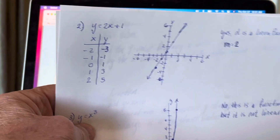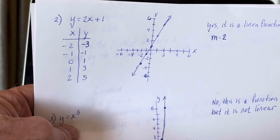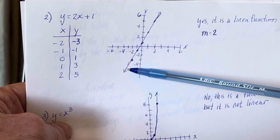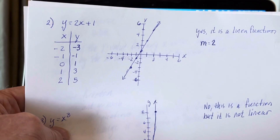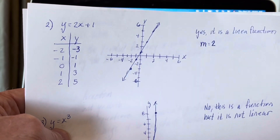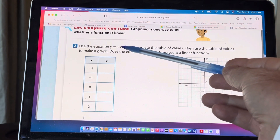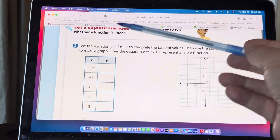For x = 2: 2 times 2 is 4, plus 1 is 5. You can see the table is completed here, and our graph is a straight line. So the answer is yes, this is a linear function, and the rate of change is 2. The rate of change is always the number in front of the x variable.